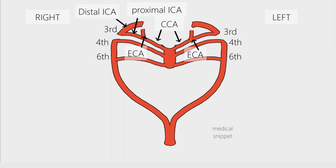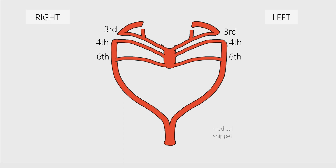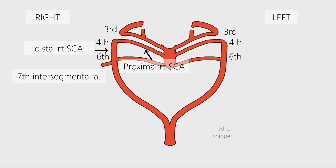The right fourth aortic arch forms the proximal part of the right subclavian artery. Its distal part is formed by a portion of the right dorsal aorta and the seventh intersegmental artery. The right dorsal aorta, caudal to the seventh intersegmental artery, disappears.